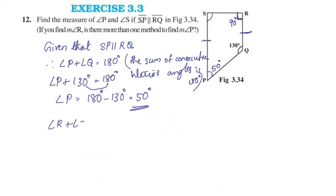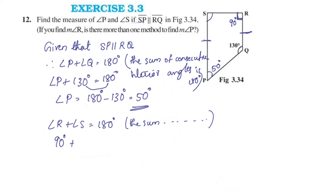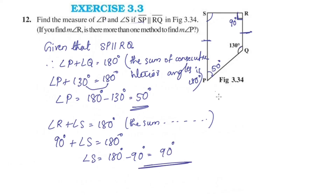Similarly, Angle R plus Angle S equals 180 degrees. Angle R is 90 degrees. So 90 plus Angle S equals 180 degrees, which gives Angle S equals 180 minus 90 equals 90 degrees. Therefore Angle S is 90 degrees.